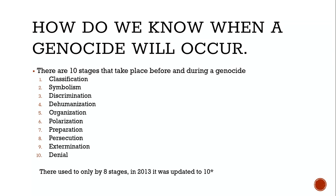Genocides are often justified as being in the national interest. Societies most open to genocide have at least one significant minority group that's somewhat disadvantaged compared to the majority, and one group usually blames the other for their misfortunes. Beware the demagogue — someone who feeds off stereotypes and prejudices. It's prevalent in populist politics, where people get riled up emotionally and specific groups are blamed for their problems.